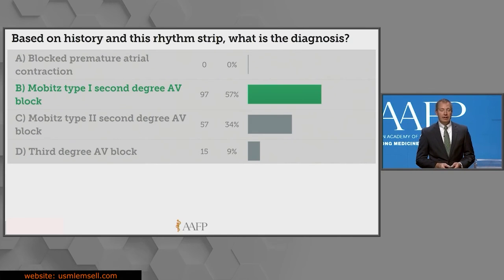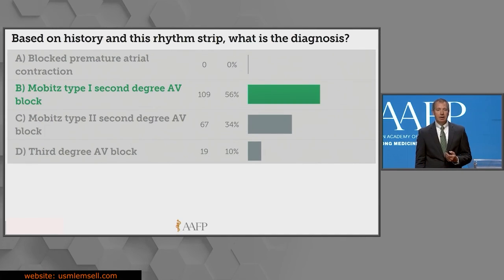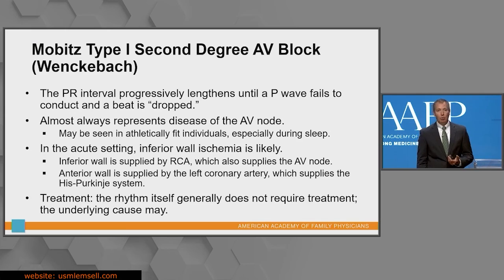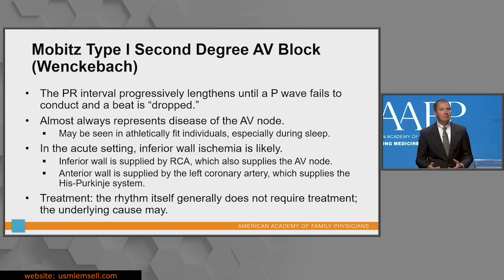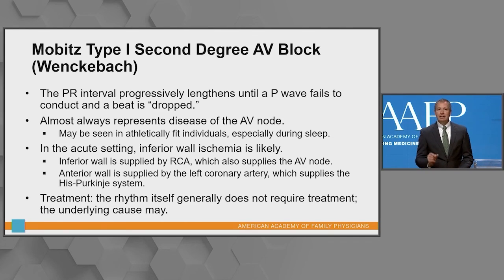Most are going with Mobitz type 1 second-degree AV block, with some consideration of type 2 and third-degree. This was a second-degree type 1. One hallmark of second-degree AV blocks is a gap in the rhythm strip — you were expecting a QRS complex and it wasn't there. Looking at the rhythm strip, the PR interval gradually lengthens more and more until finally there's a P wave that doesn't conduct, and then the process resets.